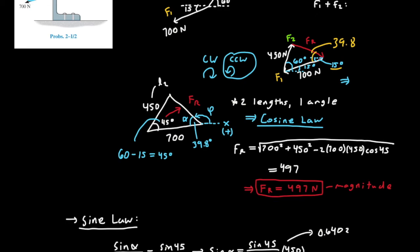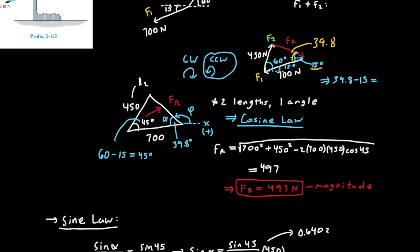to find the angle on top of the 15 degrees, this is simply going to be 39.8 minus the 15 degrees. And that equals 24.8 degrees.